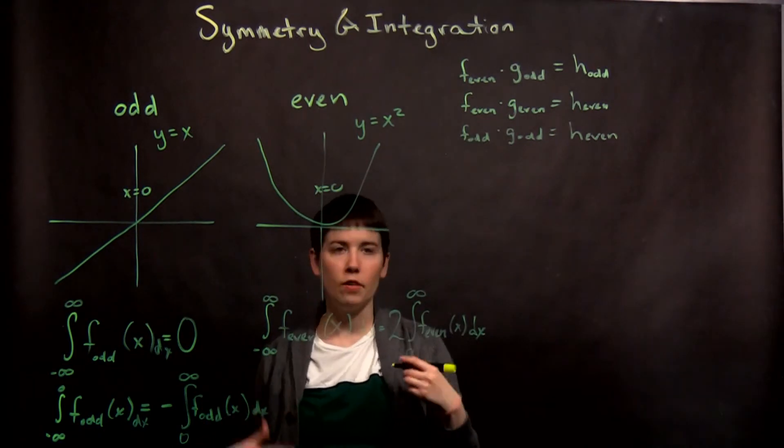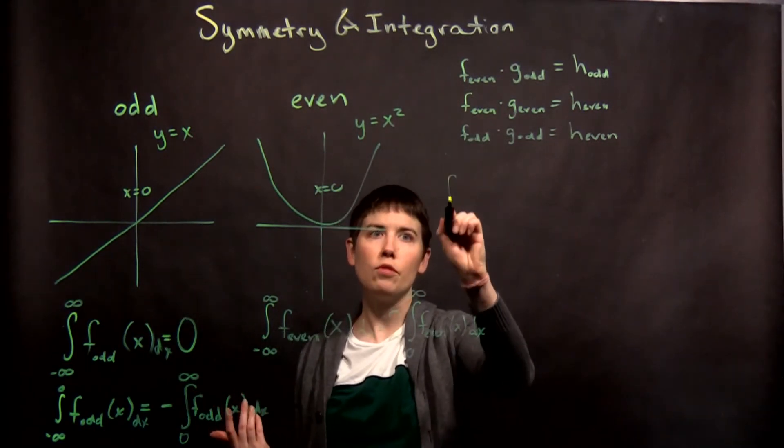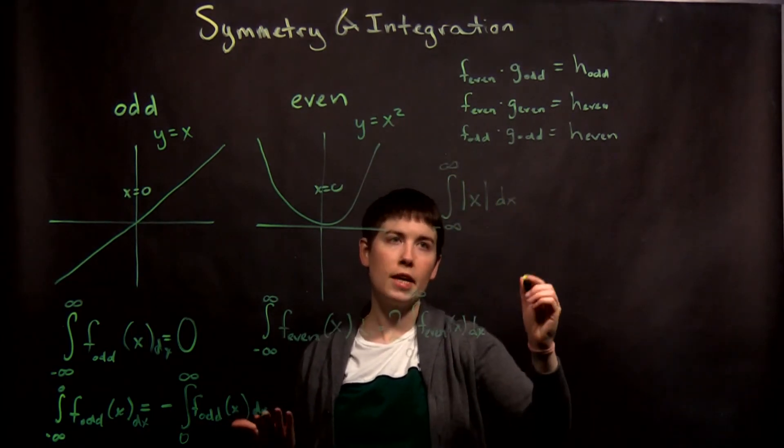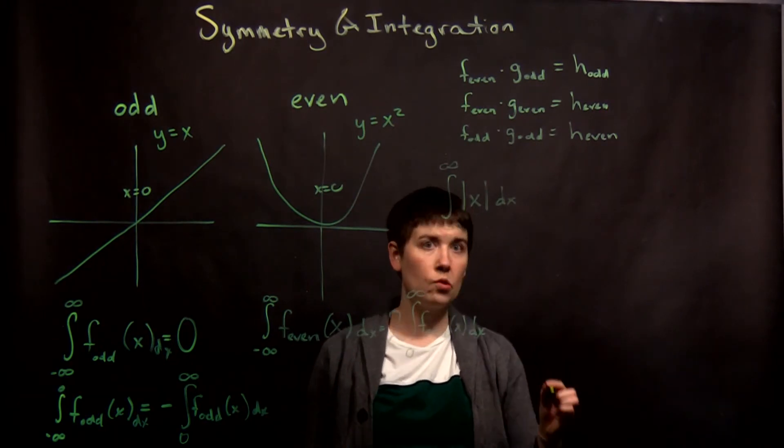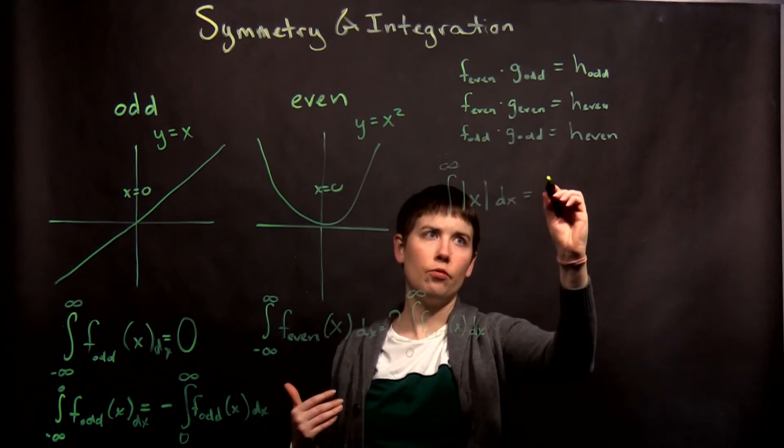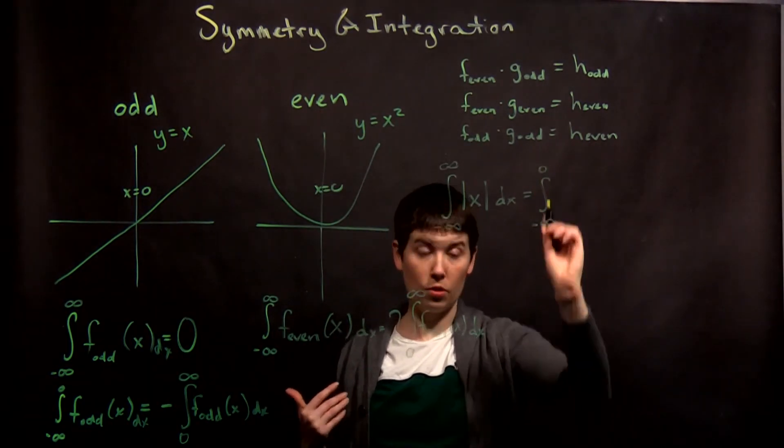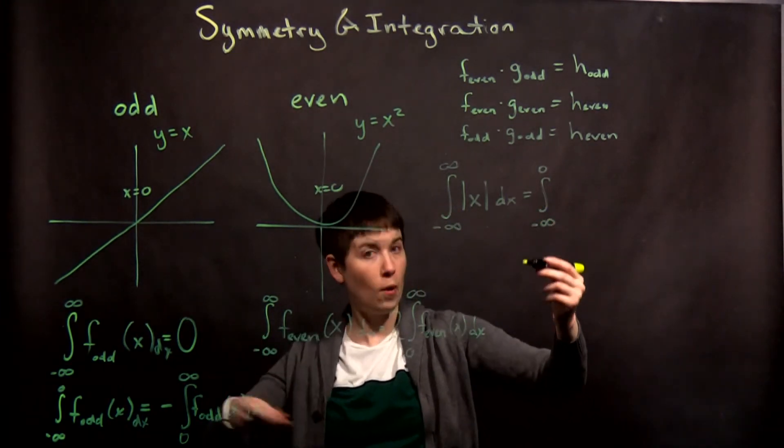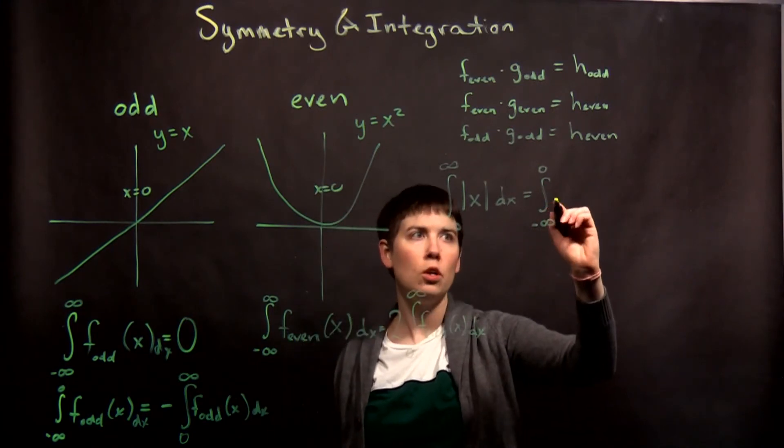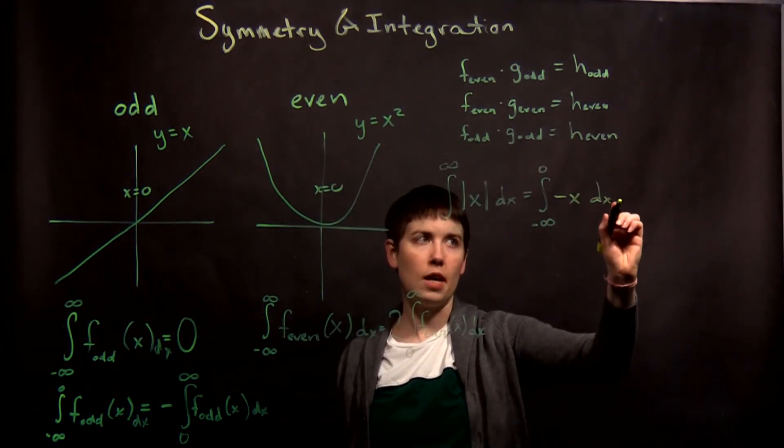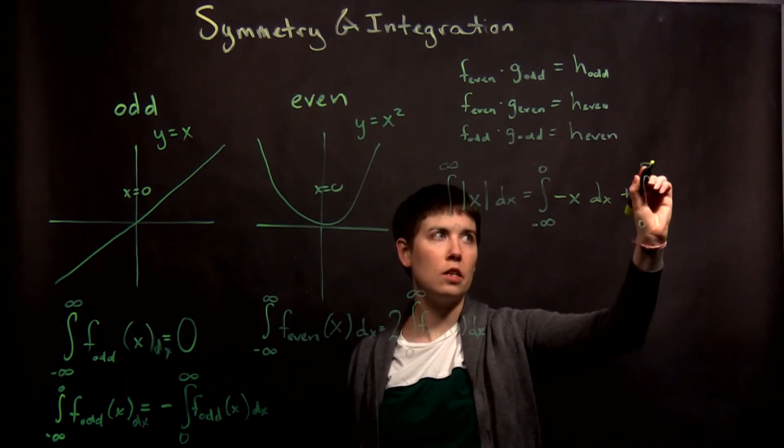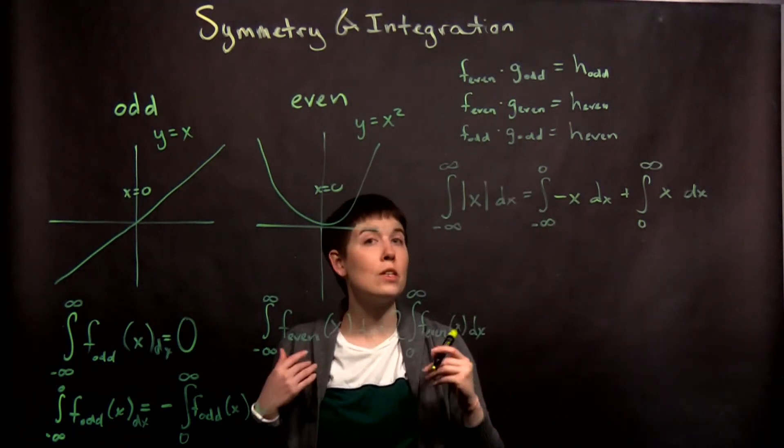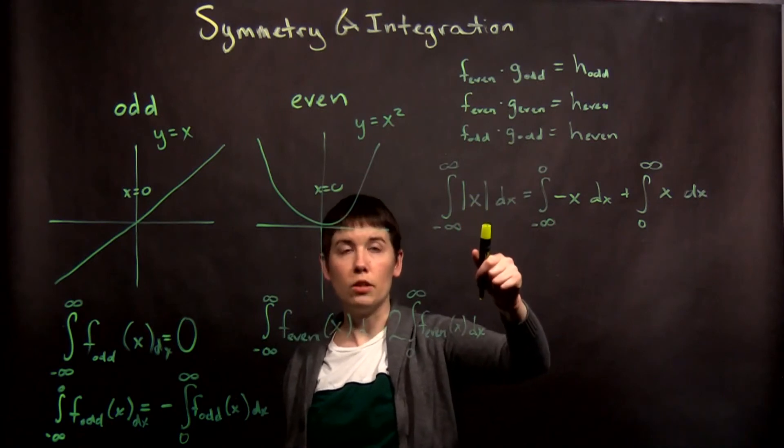So one example of how we can use these symmetry arguments is, for instance, if we have the function absolute value of x. Right? So here we can think about breaking it apart, and the absolute value of x is going to be your positive values from negative infinity to zero. So what would those positive values be? If your x is, say, negative two, absolute value of x is actually positive two. So there it's actually negative x dx plus zero to infinity of x dx. So in this case we've broken it apart into two things because you might just not know what the integral of the absolute value of x is.